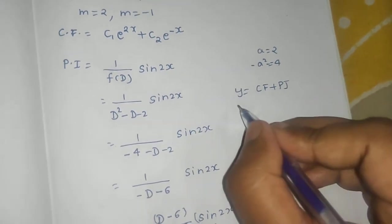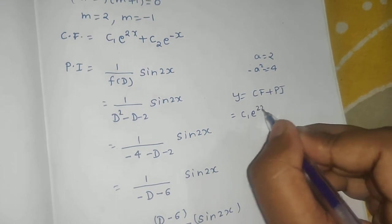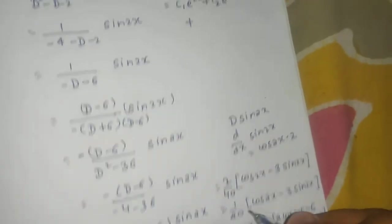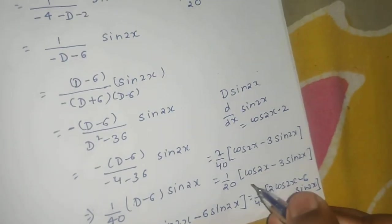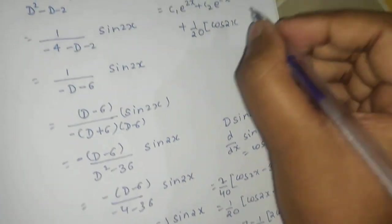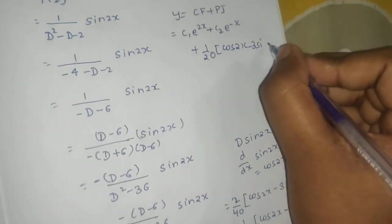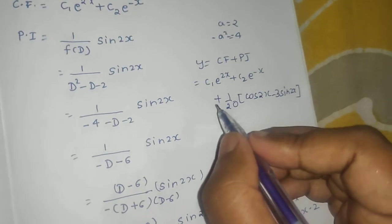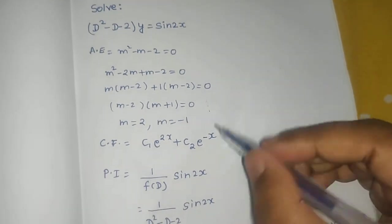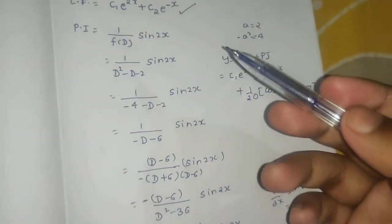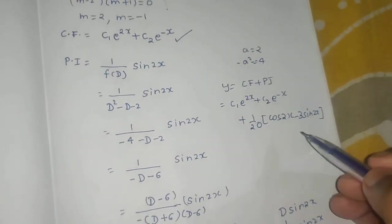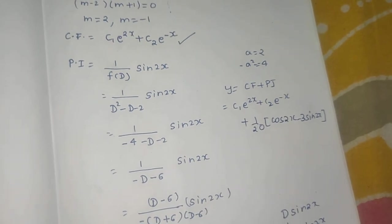The final answer is CF + PI. The complementary function was c₁e^(2x) + c₂e^(-x), and the particular integral is (1/20)(cos(2x) - 3sin(2x)). First find the auxiliary equation to get the CF, then solve for the PI, and sum them to get the general solution.